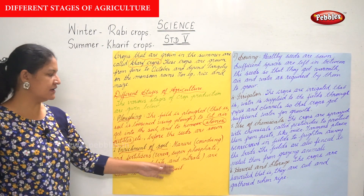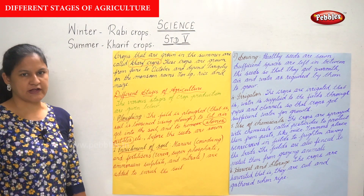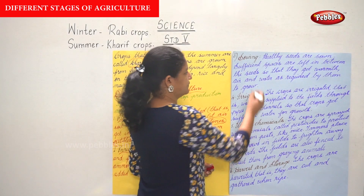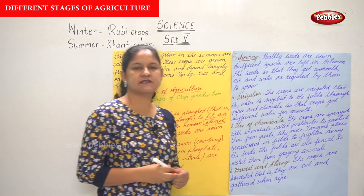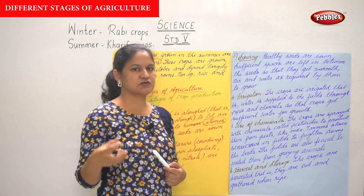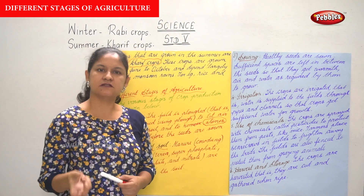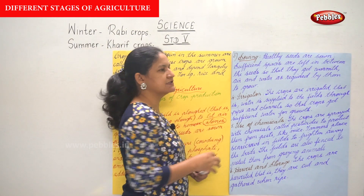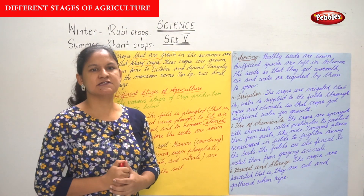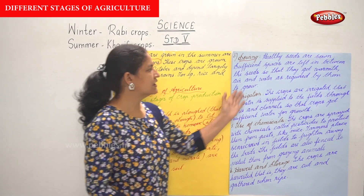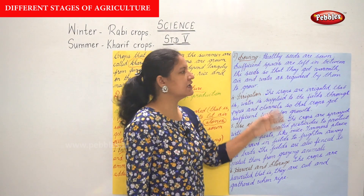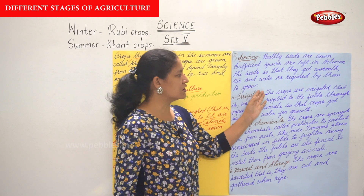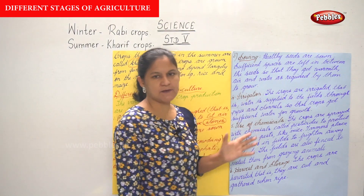The next stage in agriculture is sowing. Once the land is ploughed, the extra stones are removed, and the soil is enriched with manure and fertilizers, healthy seeds are sown. Sufficient spaces are left between the seeds so that they get the warmth, air, and water required for them to grow.